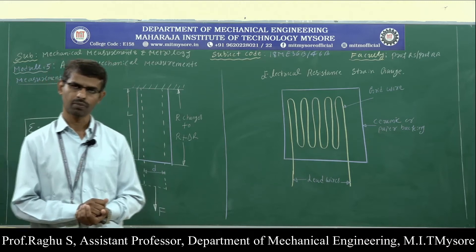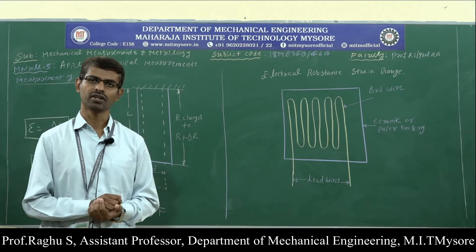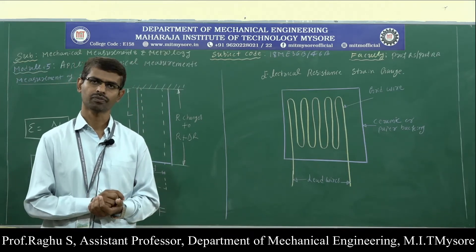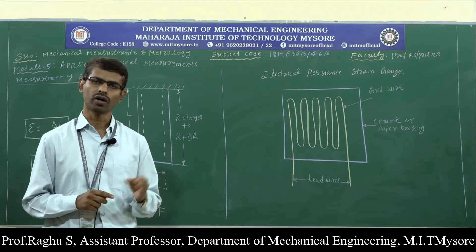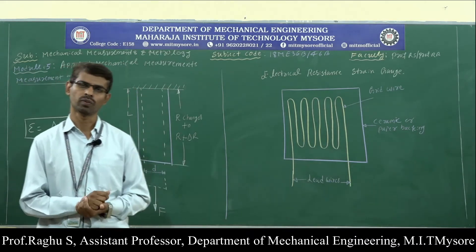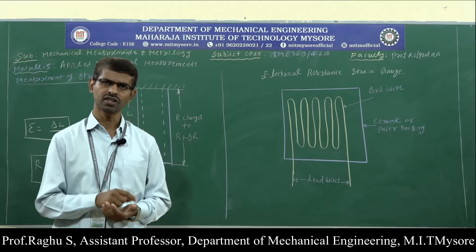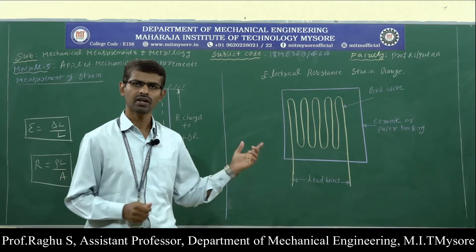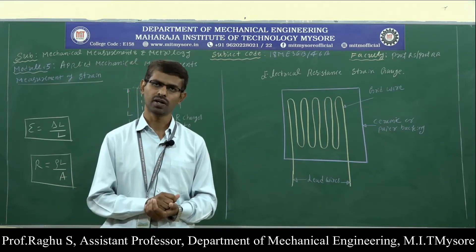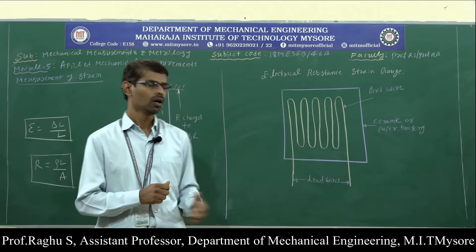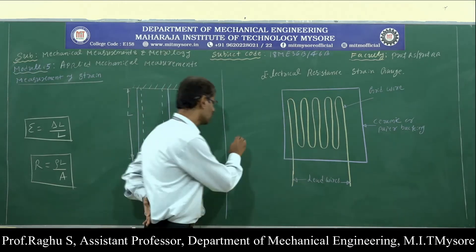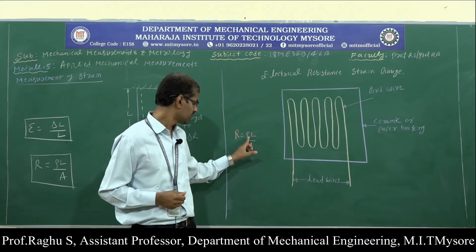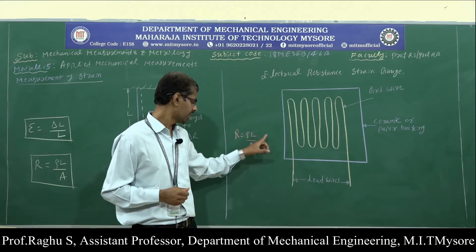Now let us discuss the electrical strain gauge. In electrical strain gauges, we have three types: resistance type, inductance type, and capacitance type. In the resistance type, we have three subtypes: unbonded strain gauge, bonded strain gauge, and semiconductor strain gauge. The electrical resistance strain gauge consists of an electrical resistance wire which is arranged in a zigzag manner. The resistance wire is bonded or pasted to the test specimen whose strain has to be measured using adhesive material. The resistance of the wire is given by R = ρL/A, where ρ is the resistivity of the material, L is the length of the conductor, and A is the area of the conductor.